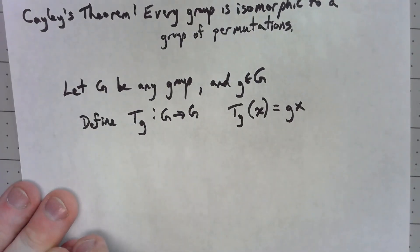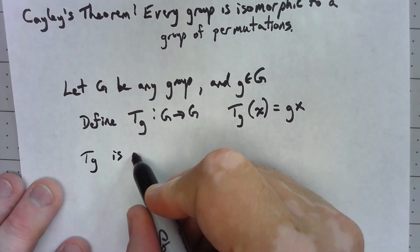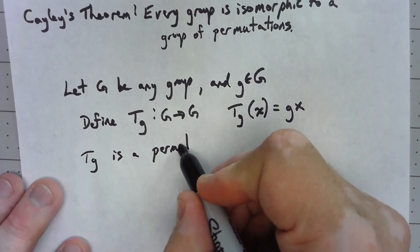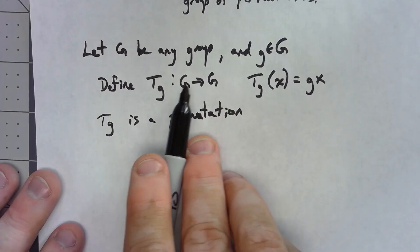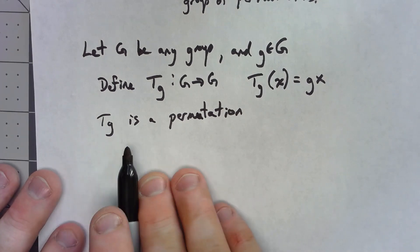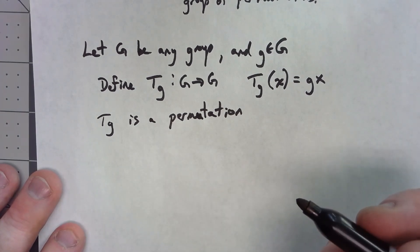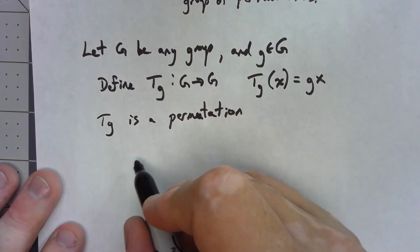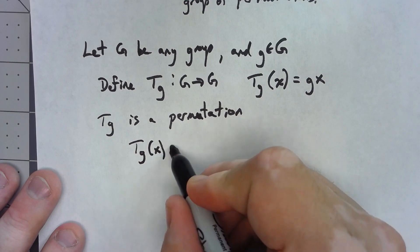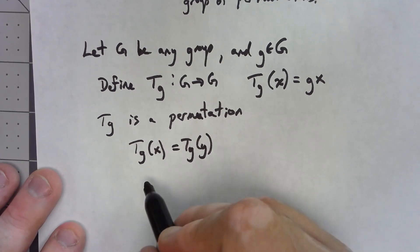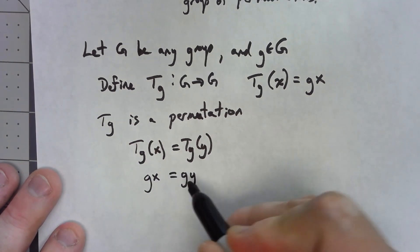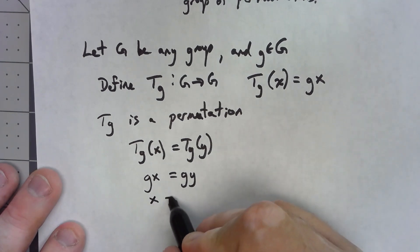The first thing to notice is that t_g is a permutation. A permutation is a function that is one-to-one and onto from something to itself, so we need to show that t_g is both one-to-one and onto. Suppose t_g(x) equals t_g(y) for group elements x and y. That would mean gx equals gy, and then we can just use left cancellation to get x equals y. So it's one-to-one.